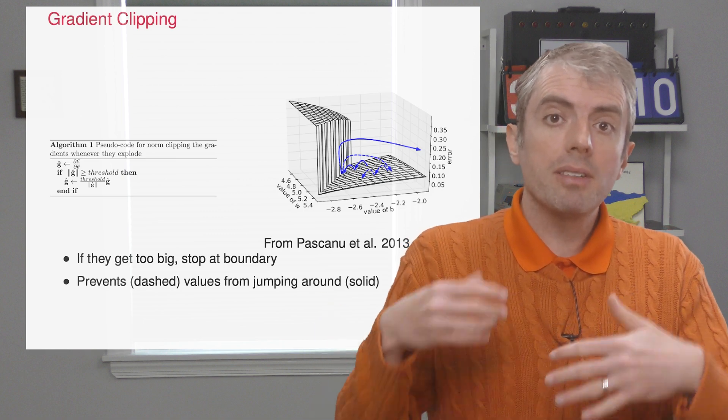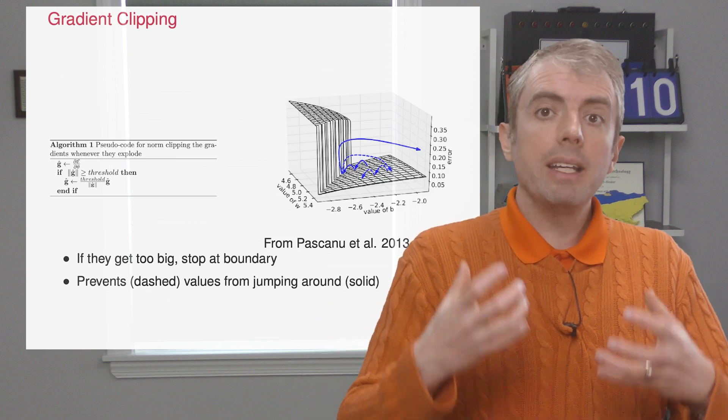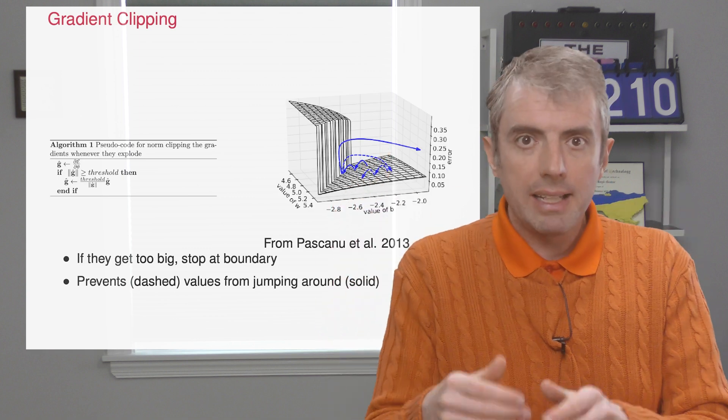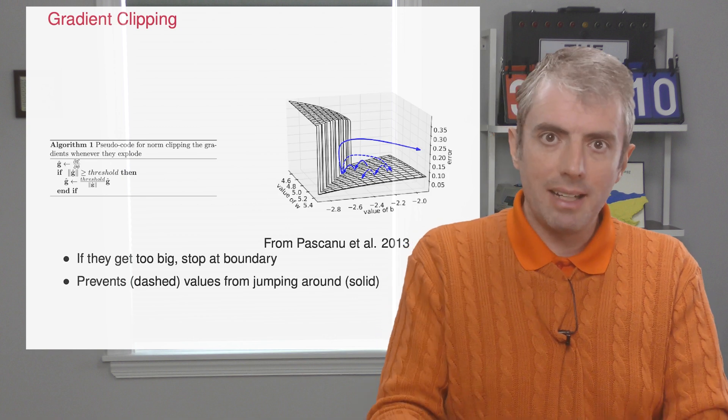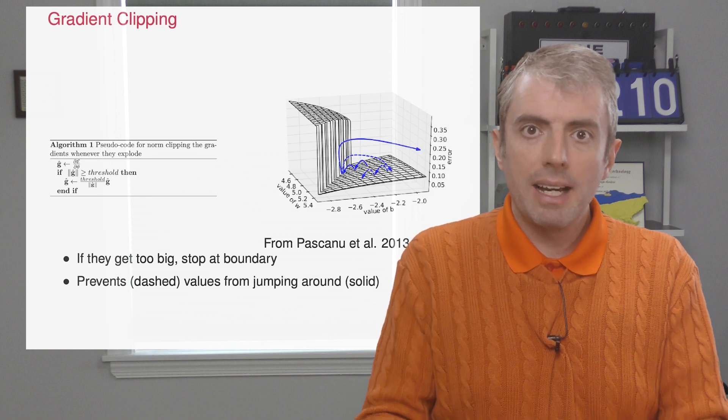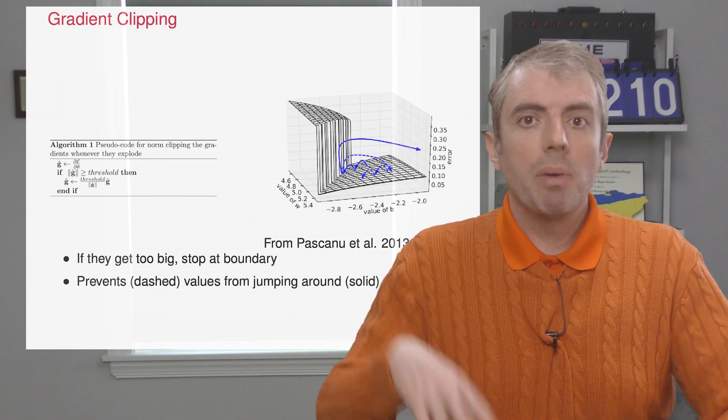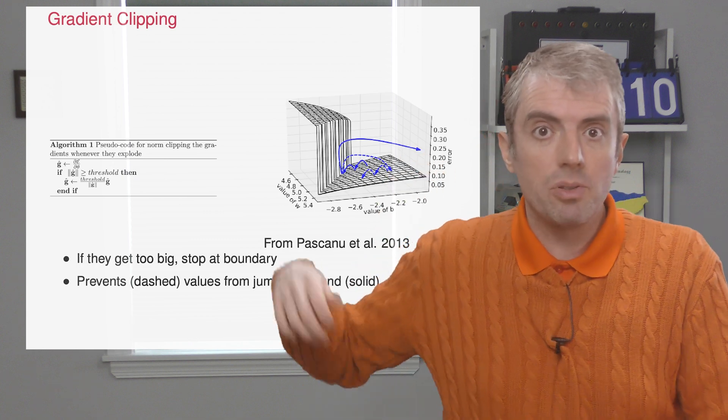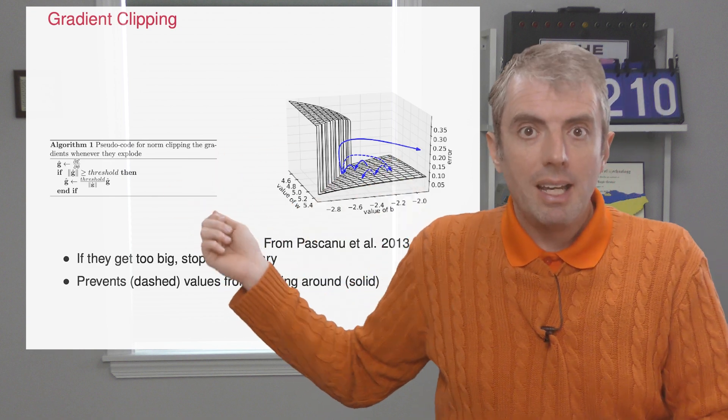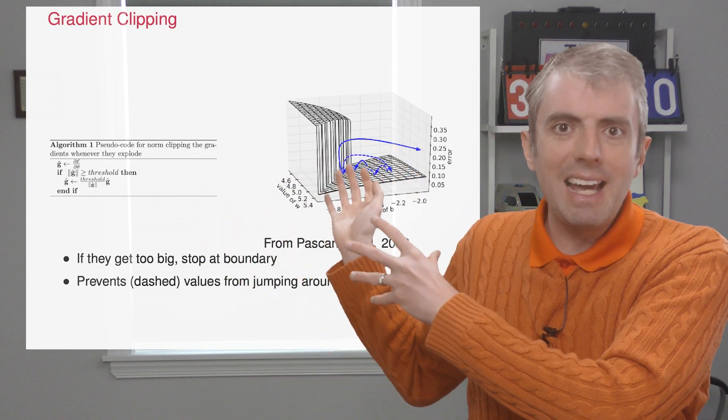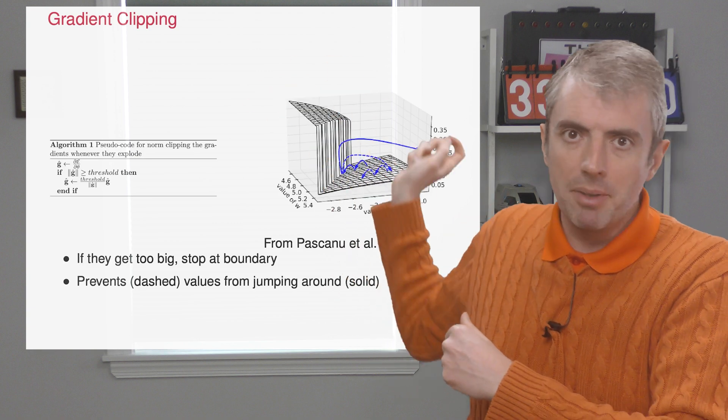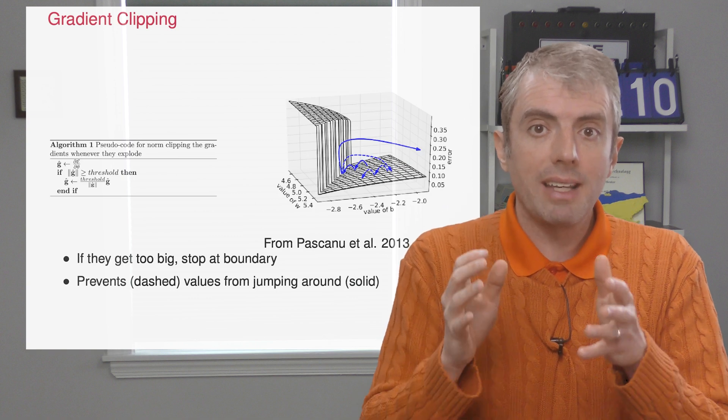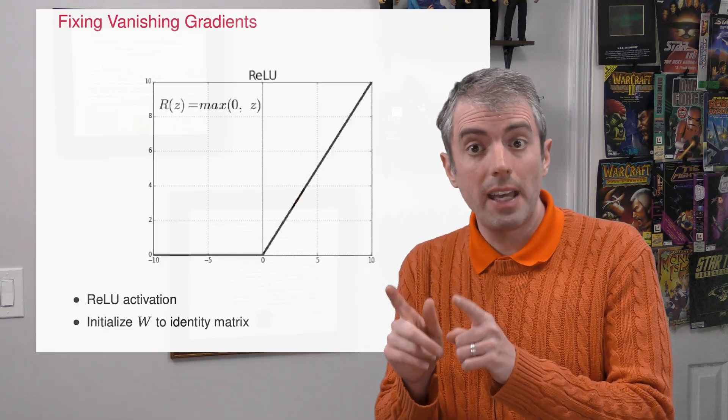To fix exploding gradients, you can just set a threshold. If the gradient gets above that threshold, you just cap or clip the gradient at that threshold. There's a nice analysis from Pascanu et al. 2013 that shows how this happens. But if you don't do gradient clipping, stochastic gradient descent can send you jumping on crazy trajectories in your parameter space. Here we have the parameters w and b, and then you have this huge jump in the parameter space. But if you do gradient clipping, then you end up with a much saner trajectory that your model can actually learn.